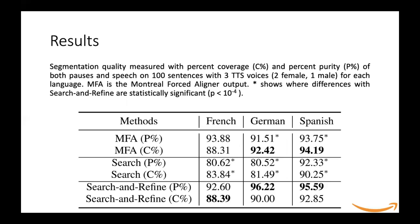We present results of segmentation quality measured with percentage coverage (C%) and percentage purity (P%) of both pauses and speech, on 100 sentences with three different TTS voices — two female and one male — for each of the three languages considered: French, German, and Spanish. MFA refers to the Montreal Forced Aligner output in the table, and a star indicates where differences are statistically significant (p-value less than 10 to the power of minus 4). The search-and-refine method always outperforms the search-only (DTW) method, and outperforms the Montreal Forced Aligner for German and Spanish in terms of purity, with comparable coverage values.